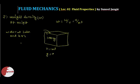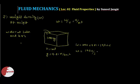For Earth, the gravitational acceleration is 9.81 meter per second square. So for 1000 kg of water, the weight equals 1000 into 9.81, which is 9810 newton. From this we can define the weight density or specific weight of water on Earth as 9810 newton per meter cube.